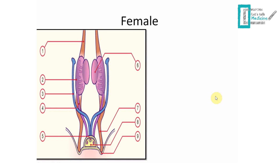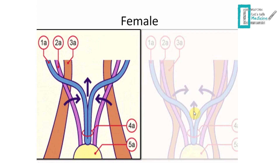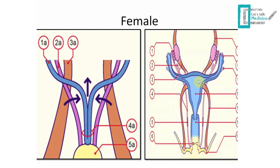In females, with no hormonal input, the Müllerian ducts get closer together and eventually fuse to give us the uterus, fallopian tubes, cervix, and upper one-third of the vagina. The Wolffian duct regresses and dies. The gubernaculum gives us two important ligaments: the ovarian ligament, attached to the ovaries, and the round ligament.